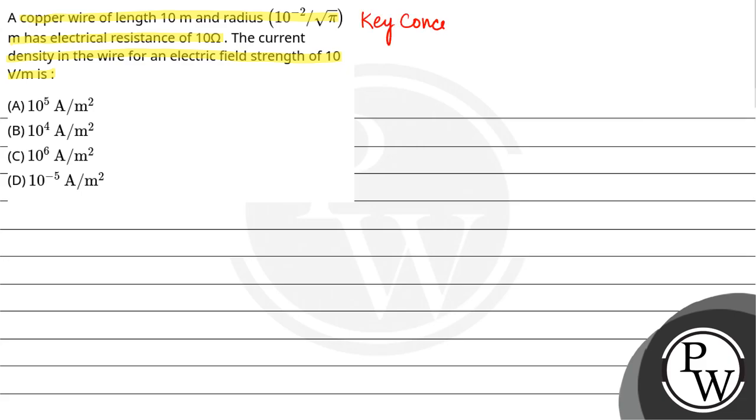So here our key concept is resistance of a conductor. R is equal to rho L upon A. A is the cross sectional area which is equal to pi r square. And second thing is current density. Current density J is equal to current upon cross sectional area.